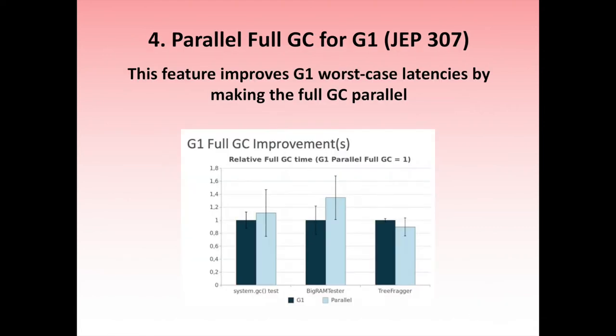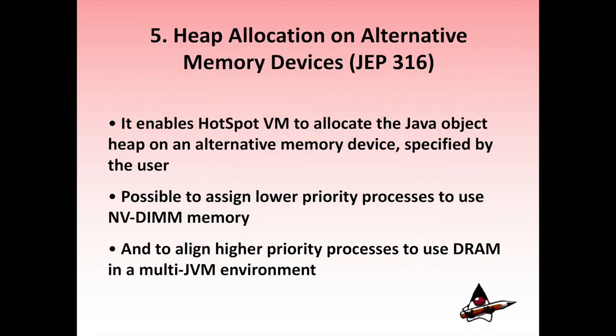Feature 4: Parallel Full GC for G1, in JEP 307. This feature improves G1 worst-case latencies by making the full GC parallel. From Java 9's release, G1 was made the default GC for the JVM, designed to avoid full GC — but when concurrent collections couldn't reclaim memory quickly enough, it would fall back on a full GC, creating a problem. This change parallelizes the full GC algorithm so that in the unlikely event of a G1 full GC, the same number of threads used in concurrent collections can be used to improve overall performance.